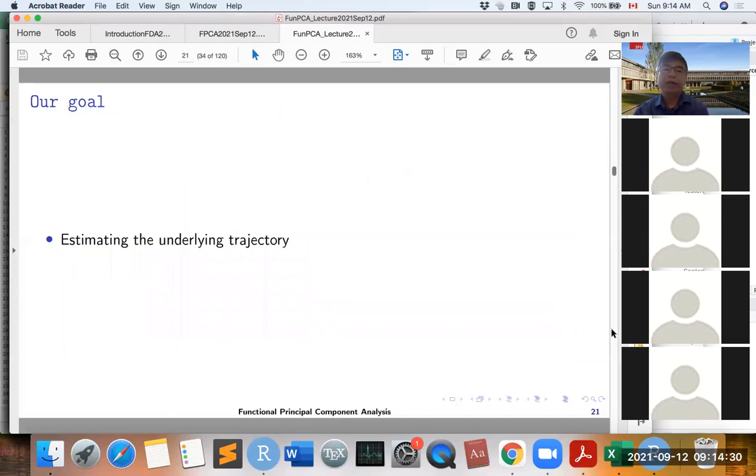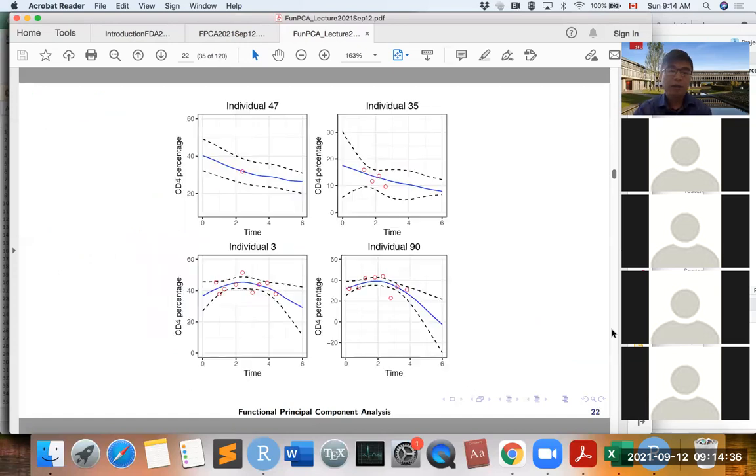Our goal here is to show you how we estimate the underlying functions. You can see here, these are four individuals. Even for individual 47, it only has one observation. The observations are marked in circles.